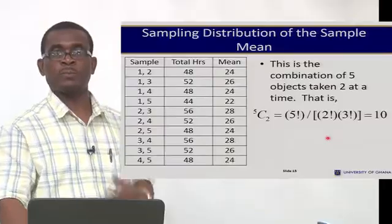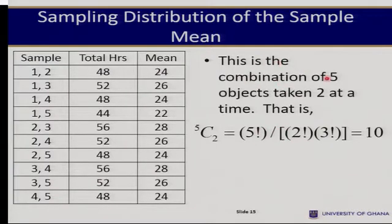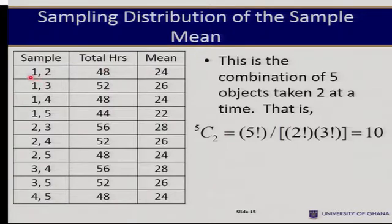We can take the samples as follows. There are ten possible combinations you can take, using the combination formula: 5 combination 2 gives us 10. For each combination, we sum the hours studied. For example, the first sample is Kofi and Ama, who studied 48 hours in total, giving a mean of 24 hours. We can do this for each of the ten combinations.